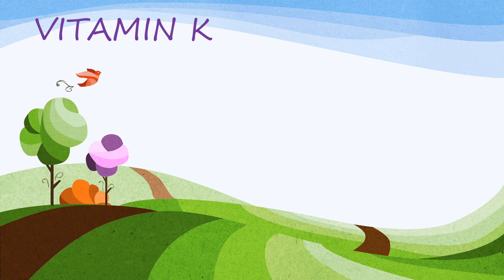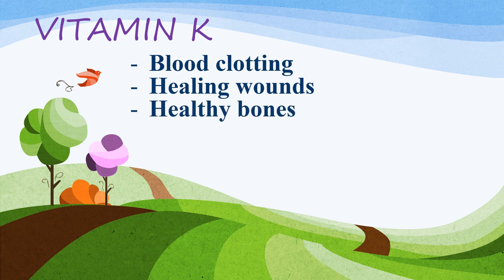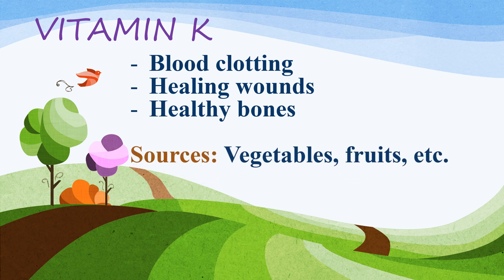Vitamin K is divided into K1 (phylloquinone, found in green plants and oil seeds), K2 (menaquinone, from intestinal bacteria), and K3 (menadione, a synthetic product). Vitamin K is a group of vitamins that the body needs for blood clotting and helping wounds to heal, as well as maintaining healthy bones. It is given to newborn babies to prevent a serious bleeding condition called hemorrhagic disease of the newborn (HDN), and it is also involved in the electron transport chain and oxidative phosphorylation.